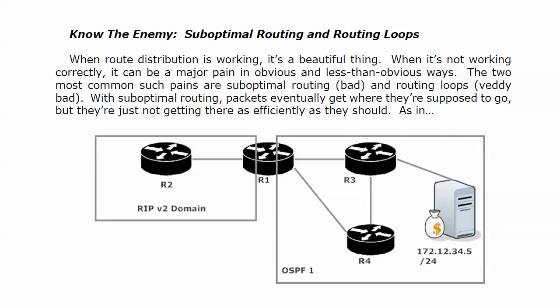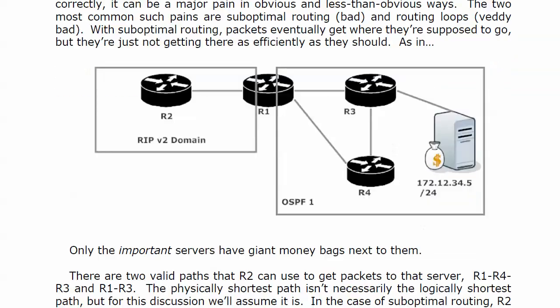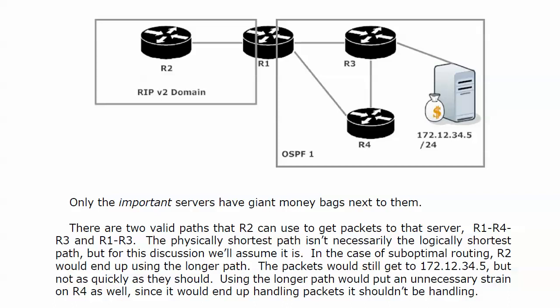In this particular example, we're going to walk through this one and then I've got a great big lab to illustrate the concept as well. Just a quick reminder for your exam and for your production networks, only the important servers have giant money bags next to them. There are two valid paths R2 can use to get packets to that server. Now, as we know, the physically shortest path is not necessarily the logically shortest path, but for this discussion we're going to assume that it is and that all links are the same speed.